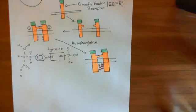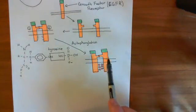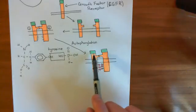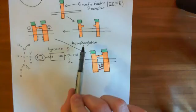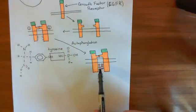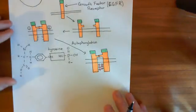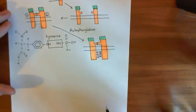Welcome to this next video on the PI3 kinase, a.k.a. the mTOR pathway. So far, the point we've got to is we have this growth factor receptor dimer, where both of the growth factor receptors in this dimer have growth factor bound to them. Autophosphorylation has now occurred, where you have added phosphate groups onto the intracellular domains of the growth factor receptors. Now what's going to happen is it's going to recruit downstream signaling pathways.